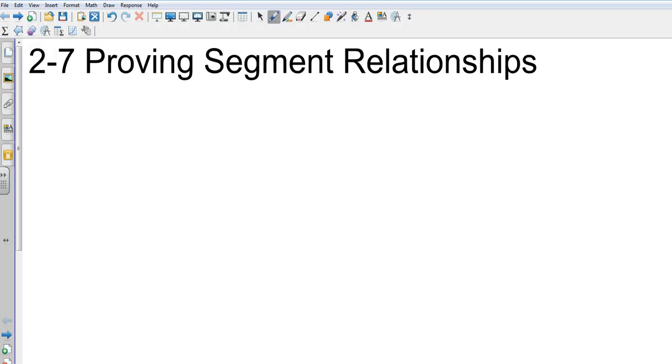Okay, Geometry Chapter 2 Section 7: Proving Segment Relationships. Certain things that we know about segments - we know how to measure them at this point, we know that two shorter segments added together would equal the longer segment, we know about bisectors cutting segments in half. Now we're just going to put that all together in a proof.